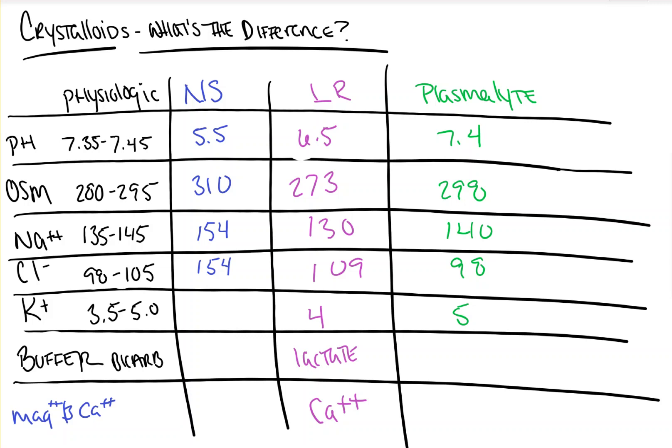But this solution uses magnesium instead of calcium to help maintain electrical neutrality, which avoids the issue of giving it with transfusions, as there is no calcium to be chelated by citrate.